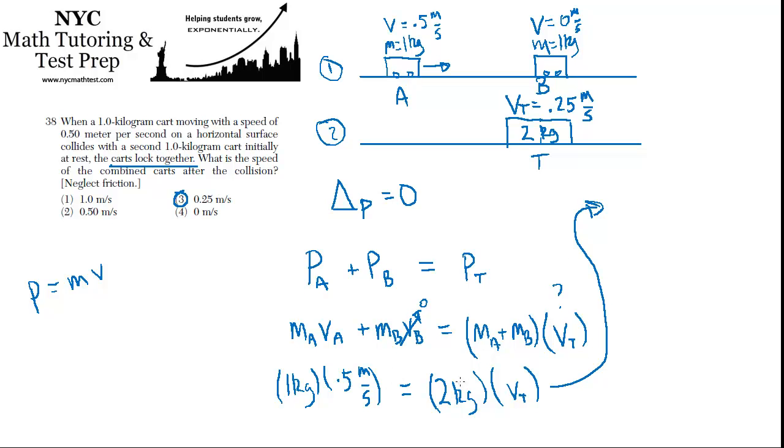One kilogram times half a meter per second is 0.5 kilogram meters per second. And that's equal to 2 kilograms times VT. And now we want to solve for VT, so we're going to divide by 2 kilograms on both sides. And VT equals 0.5 divided by 2 with the units of meters per second. And, of course, half of 0.5 is 0.25 meters per second. And we get the same answer.